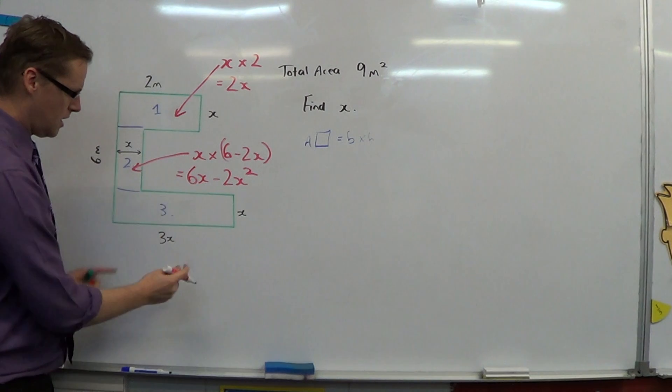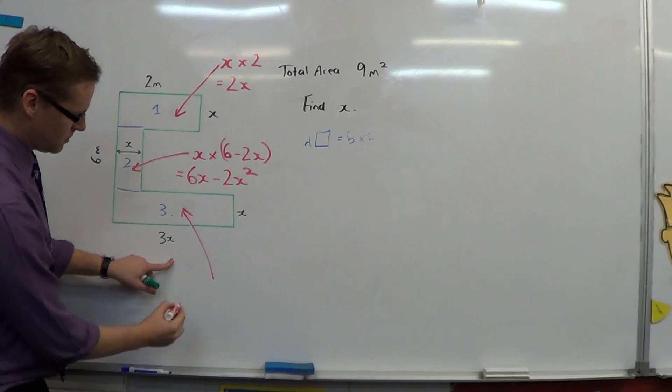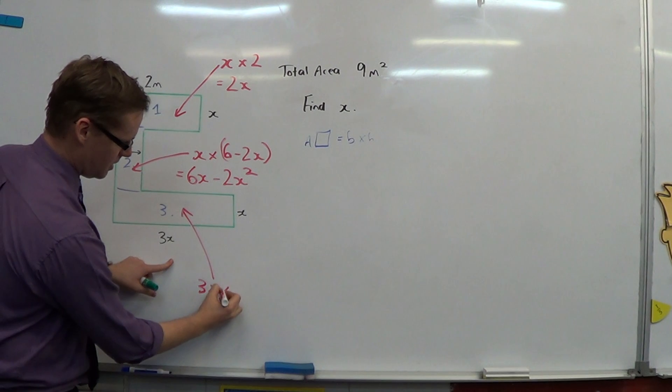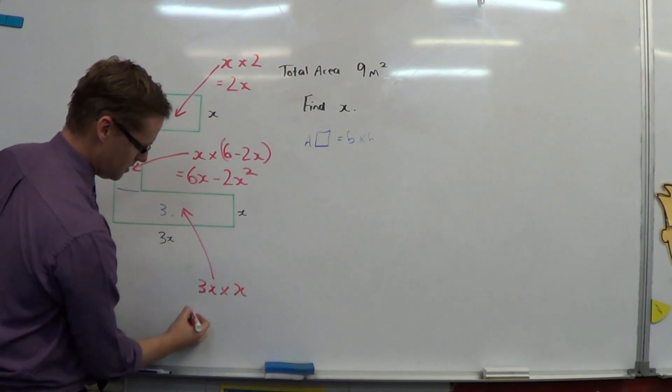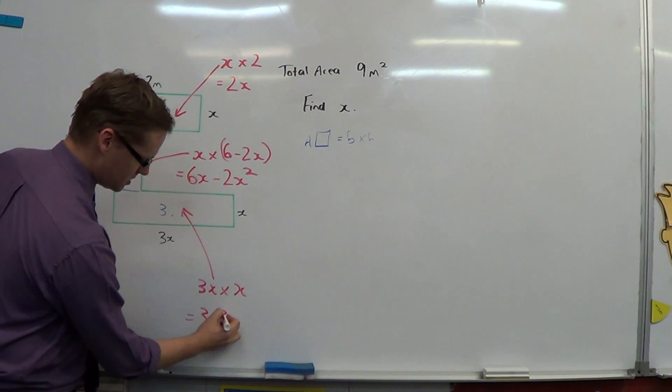And finally, our third one. We get a base of 3x and we get a height of x. So that is 3x squared.